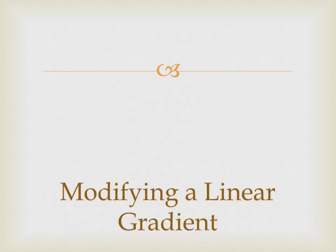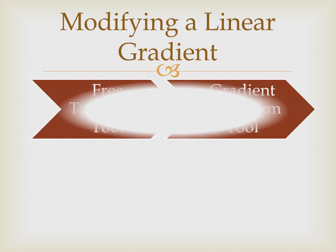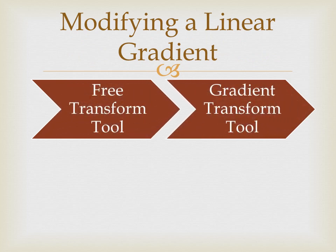Now, how to modify a gradient. To change it, click the small triangle on the bottom right corner of the free transform tool and select the gradient transform tool, then click on the object with the gradient fill.